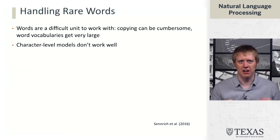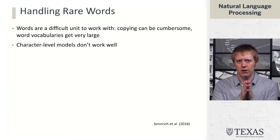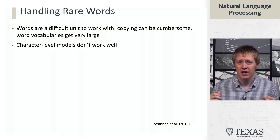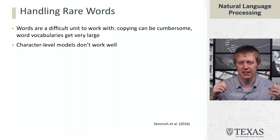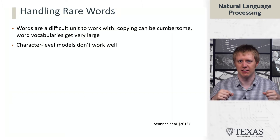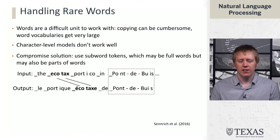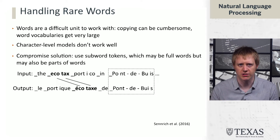So why not just produce things at the character level rather than the word level? The problem is characters are too small a unit. LSTMs can't actually remember things for that long a distance, and so now instead of producing eight words, you're producing something like 60 characters, and that's pretty hard to model. The compromise solution that the field has largely converged on is to use what are called subword tokens, or a subword tokenization scheme.